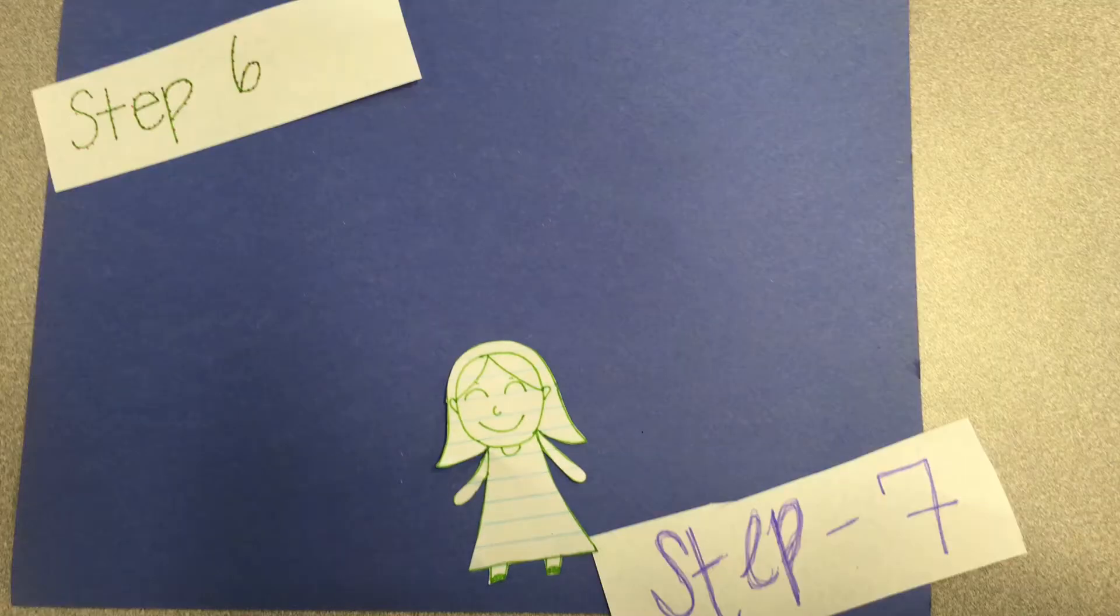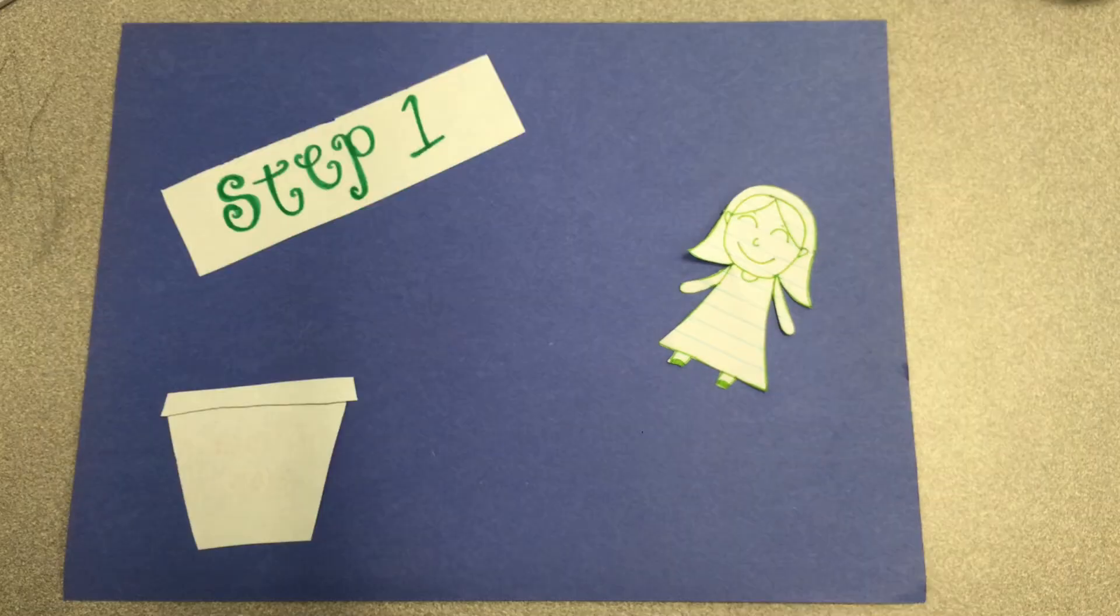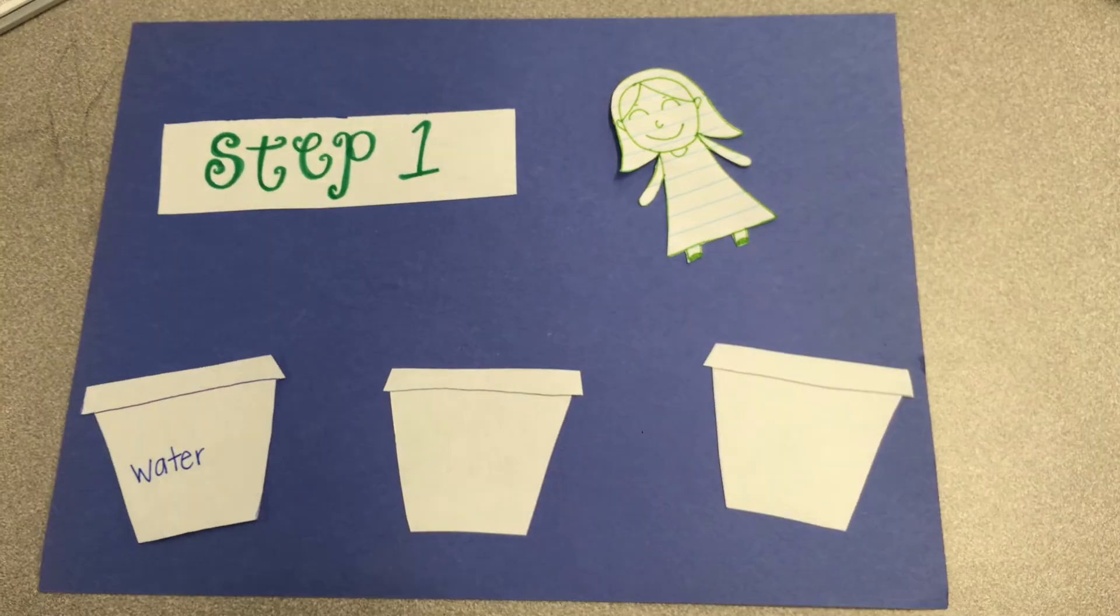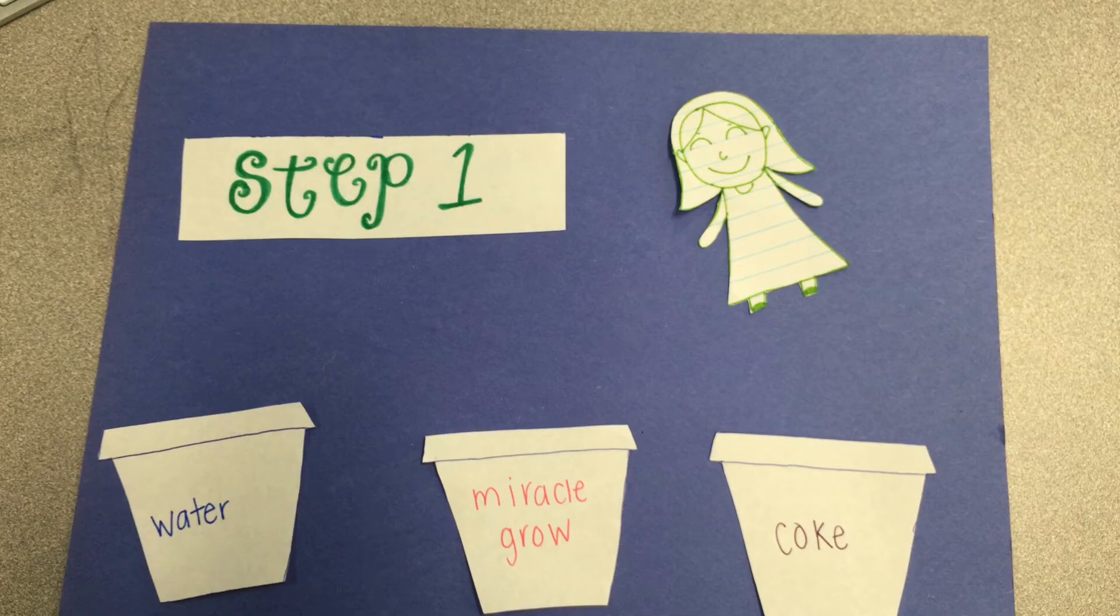Now let's do an experiment using the scientific method. Step 1: I made an observation that plants in my mom's garden will grow in soil. I think they can grow in other things like water, Miracle-Gro, and Coke.